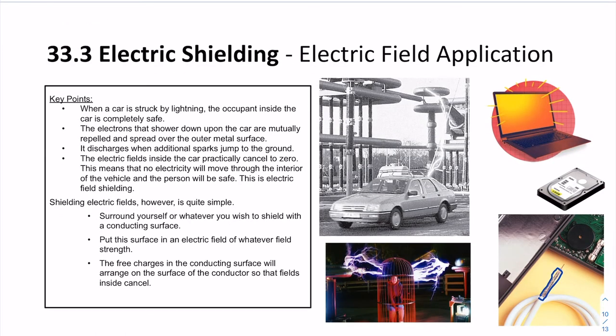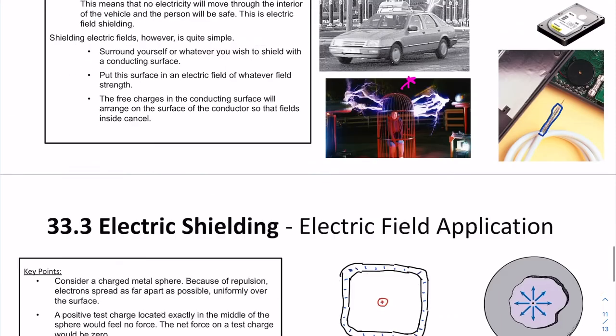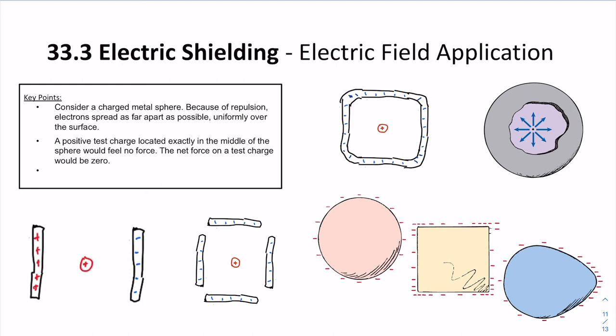All right, one last application of this is something called electric shielding. Why is it safe to be in a car during an electric storm? Or if you're like this person in a metal cage, the answer is because electrons like to spread out. And if we take our idea of electric fields showing the direction that test charges will move. And so we surround our test charge on all sides by negative charges.